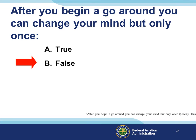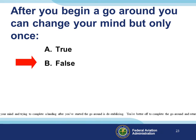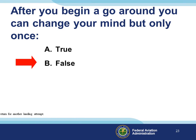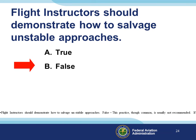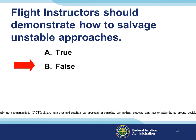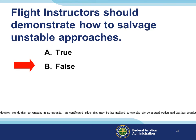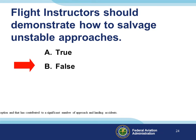After you begin a go-around, can you change your mind — but only once? False. Changing your mind and trying to complete a landing after you've started the go-around is destabilizing; you're better off completing the go-around and returning for another landing attempt. Should flight instructors demonstrate how to salvage unstable approaches? Also false — this practice, though common, is not recommended. If CFIs always take over and stabilize the approach or complete the landing, students don't get to make the go-around decision or practice go-arounds, and as certificated pilots they may be less inclined to exercise the go-around option, which has contributed to a significant number of approach and landing accidents.